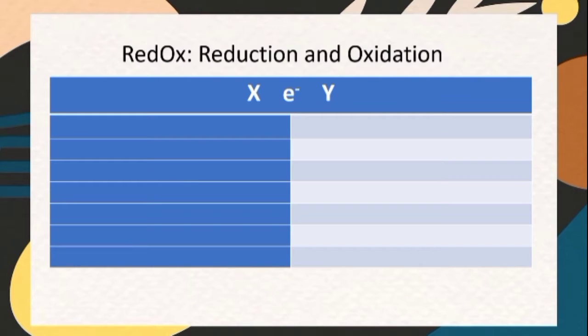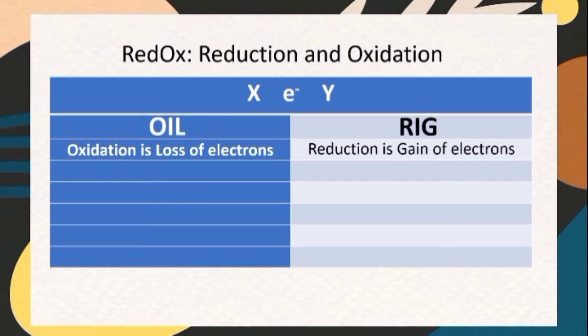You might need the acronym OIL and RIG as guide in balancing redox reactions. OIL stands for oxidation is loss of electrons, and RIG stands for reduction is gain of electrons.